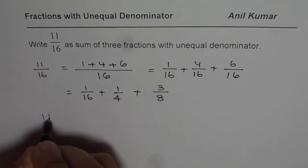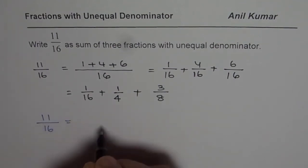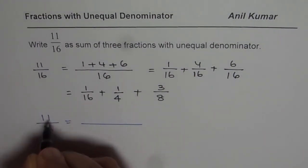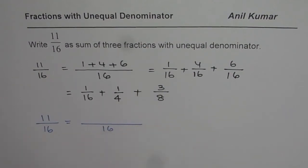There are many ways of doing it. So try it on your own. Basically, you need to write 11 as sum of three numbers. That's it. Once you do that, then you may get different denominators. So if I have,